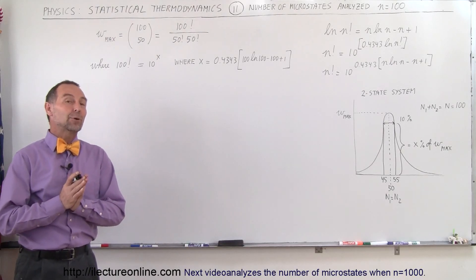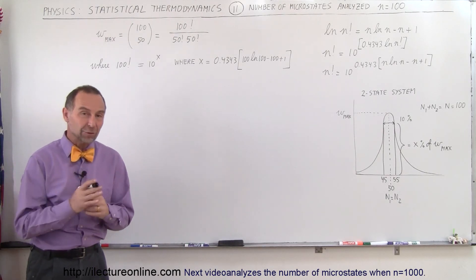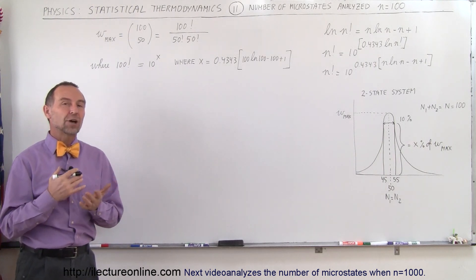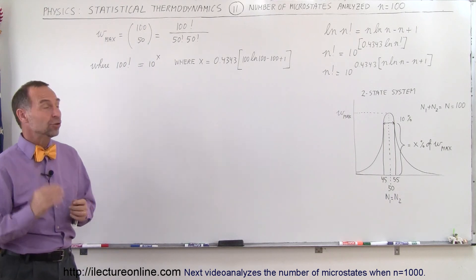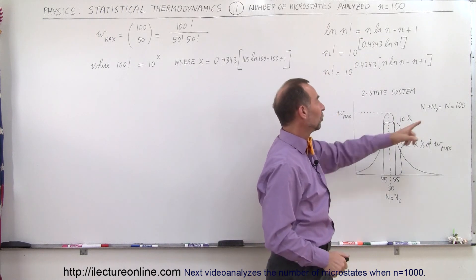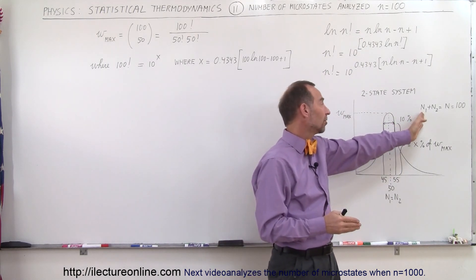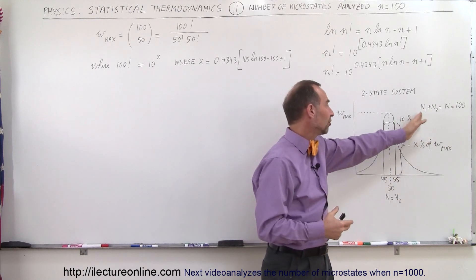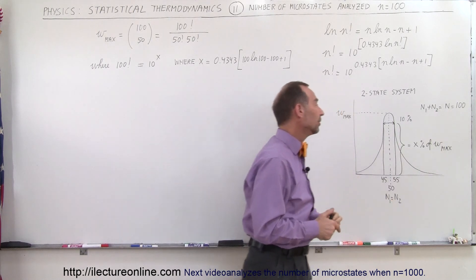Welcome to ElectronLine. We're going to look at what a distribution of microstates looks like for a population where n equals 100. We now have 100 objects that can either be in state 1 or state 2. It's still a two-state system, so when you add the objects in state 1 and state 2 together, you get 100.